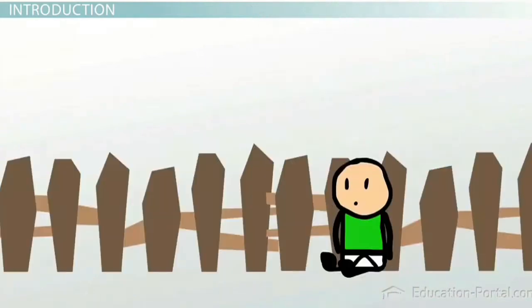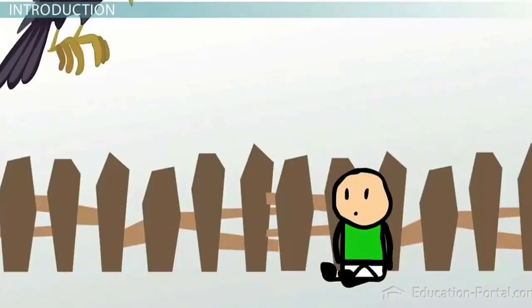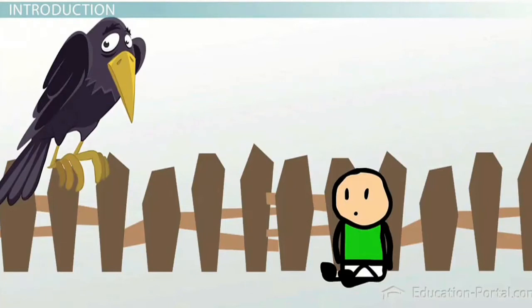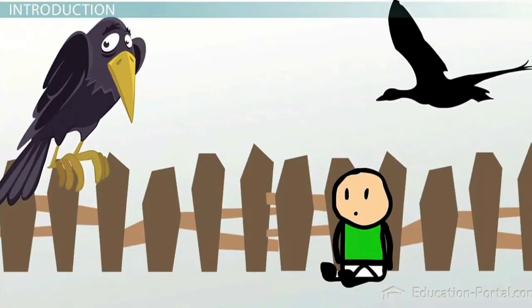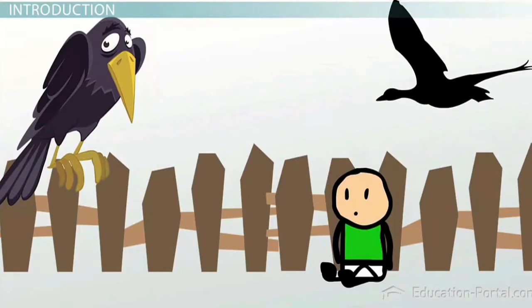But at the zoo, they see new exotic animals with wings and feathers that fly, and they know, without being told, that those animals are birds too. Let's discuss how this process occurs according to Piaget's cognitive development theory.